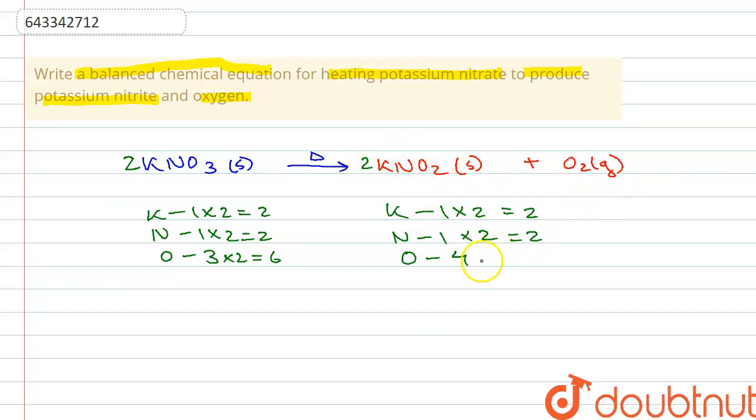Now as you can see that all the atoms has been balanced. So this is the fully balanced chemical equation of heating potassium nitrate to produce potassium nitrite and oxygen.